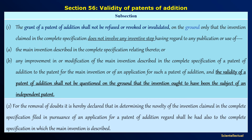Section 56, Validity of Patent of Addition. Subsection 1: the grant of a patent of addition shall not be refused, revoked, or invalidated on the ground only that the invention claimed in the complete specification does not involve any inventive step regarding the publication or use of the main invention, or improvement or modification of the main invention. And the validity of a patent of addition shall not be questioned on the ground that the invention ought to have been the subject of an independent patent.